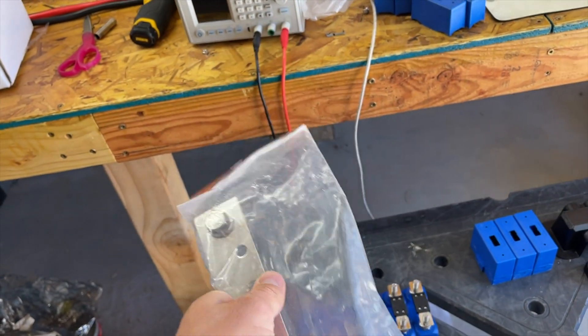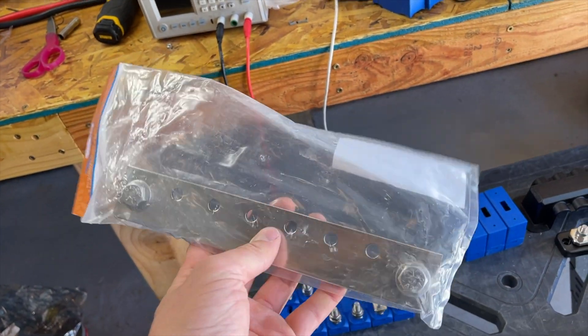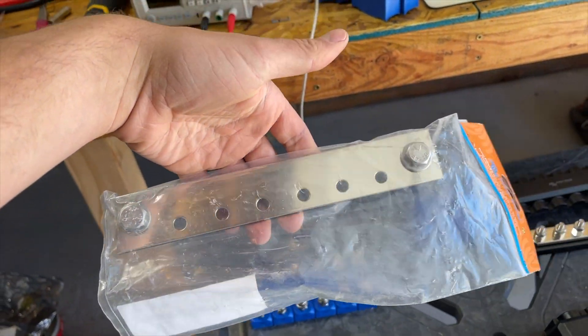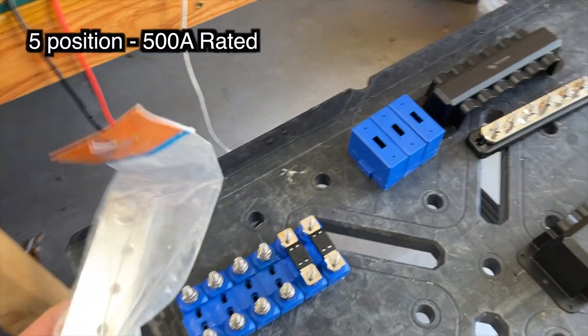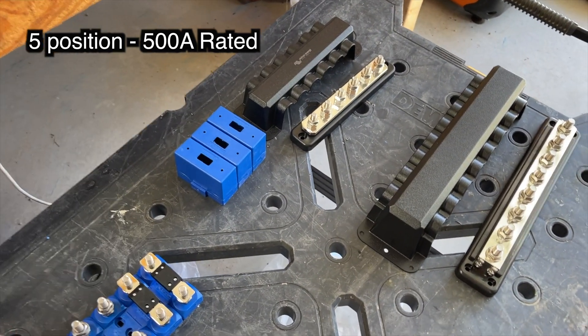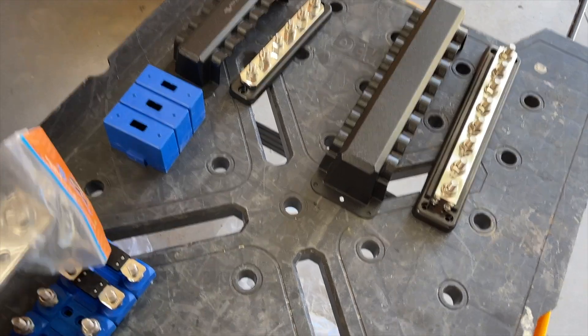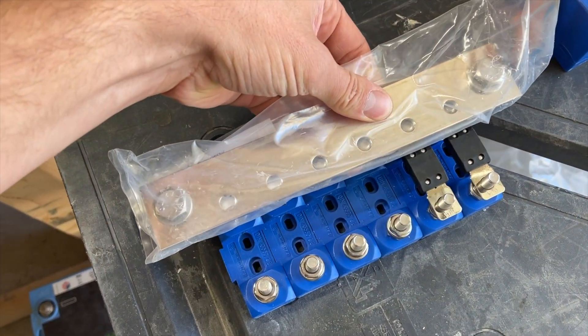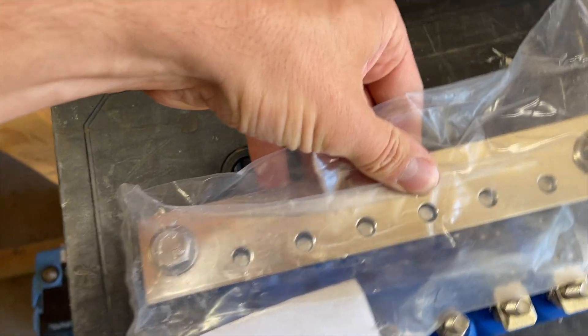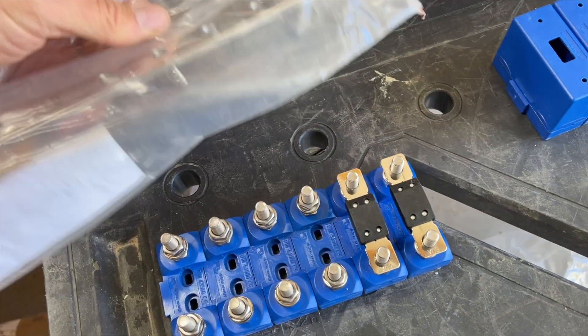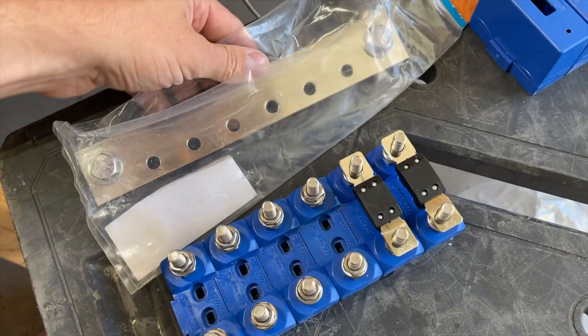This bus bar here is rated for 1500 amps. It's a six position. There's also a five position that's rated for a little bit lower amperage. I don't have that number on top of my head. But this goes on just like that. Those studs come up through and tighten down. And so that buses all of your things together.